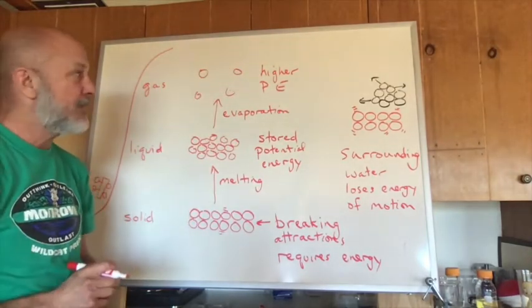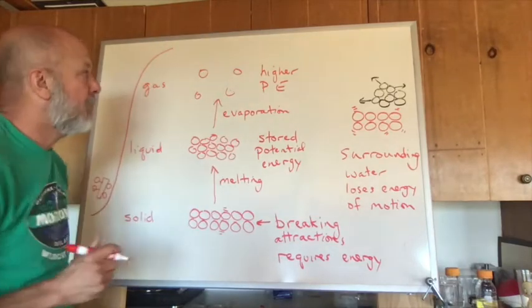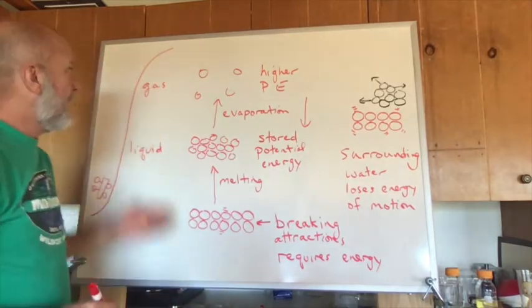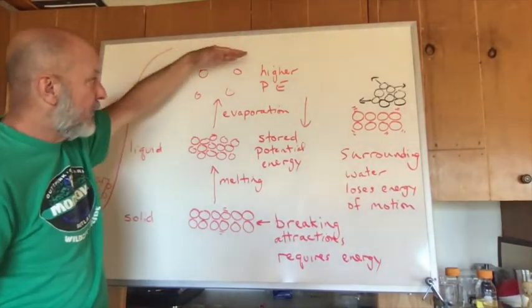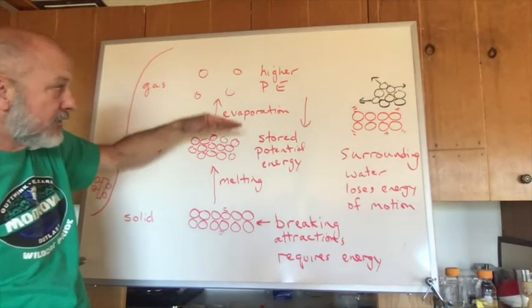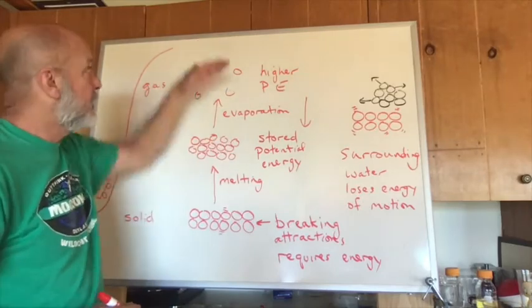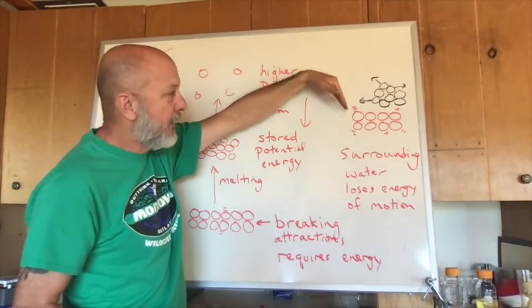If I go in the reverse, that is like the downhill part of the roller coaster. If I go from gas to liquid, that's called condensation—gas to liquid. I'm losing potential. In my roller coaster example, what happens when I lose potential? It comes down.